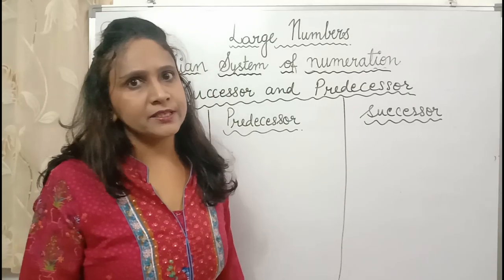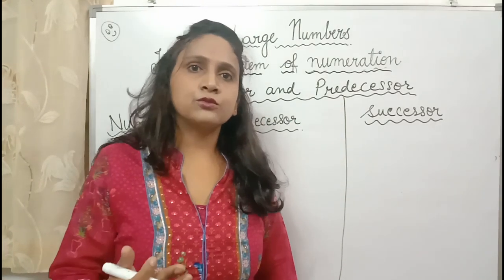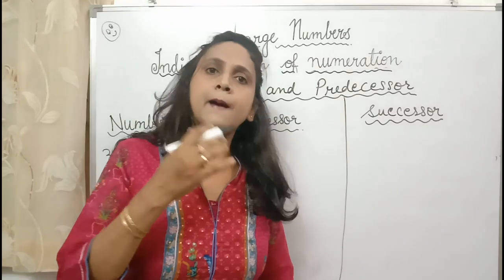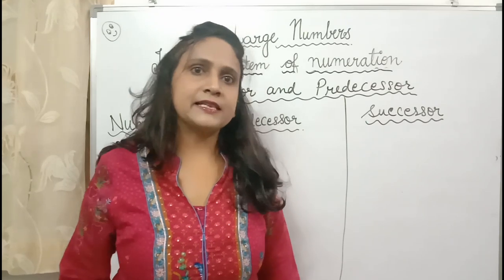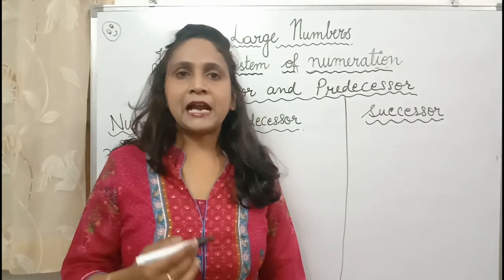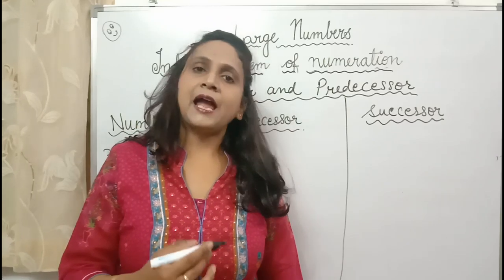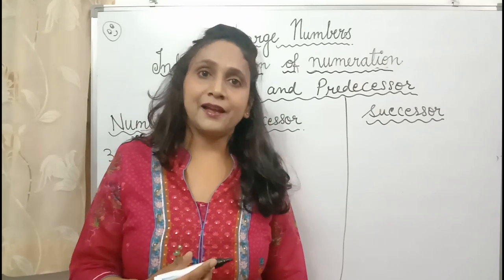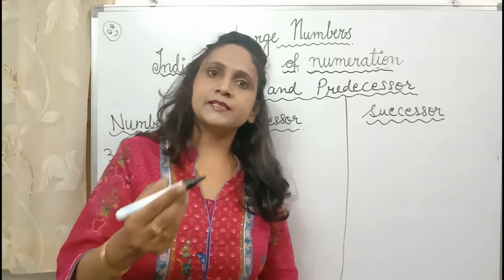Now we have successor and predecessor. Successor means a number ahead — 1 plus the number. If you have 4, the successor will be 5. If you have 7, the successor will be 8. Predecessor means a number before — you subtract 1 from the number to get the predecessor. If you have 10, the predecessor is 9 and the successor is 11. Successor: plus 1. Predecessor: minus 1.